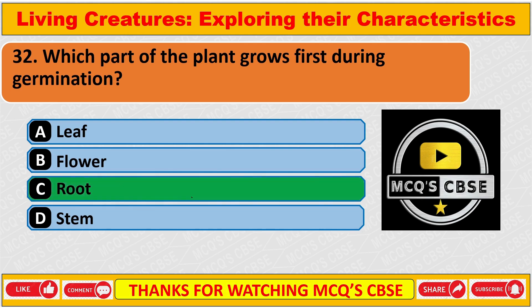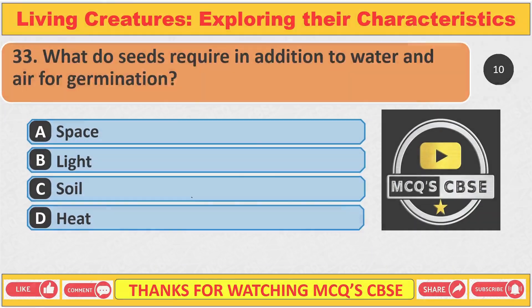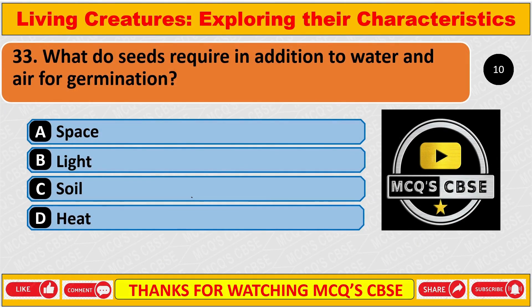The correct answer is C: Root. What do seeds require in addition to water and air for germination? The correct answer is C: Soil.